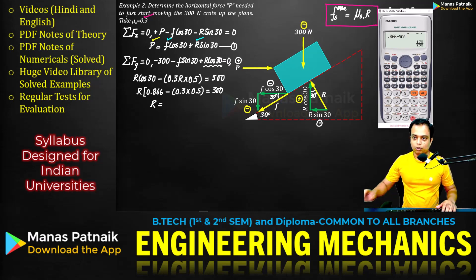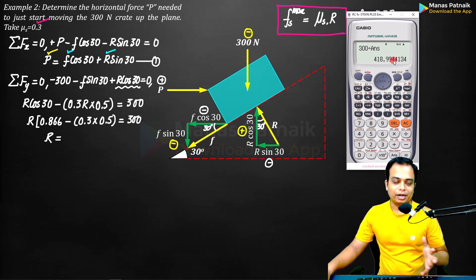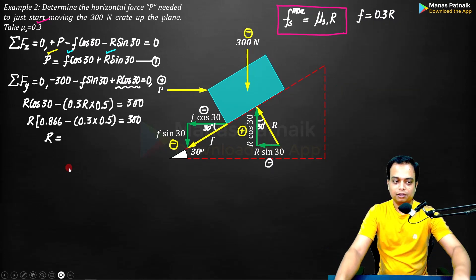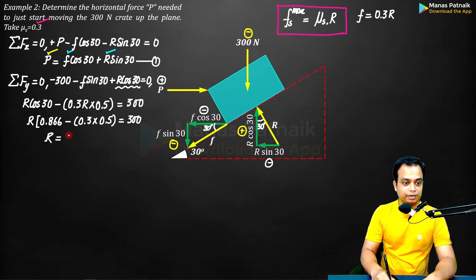0.3 into 0.5, and 0.866 minus answer. There should be one more bracket which I should have placed. So 300 divided by answer. This is what you get: 418.9, approximately equal to 419. That is the value of R that we are getting: 419 Newtons. Don't forget to place the units, 419 Newtons.